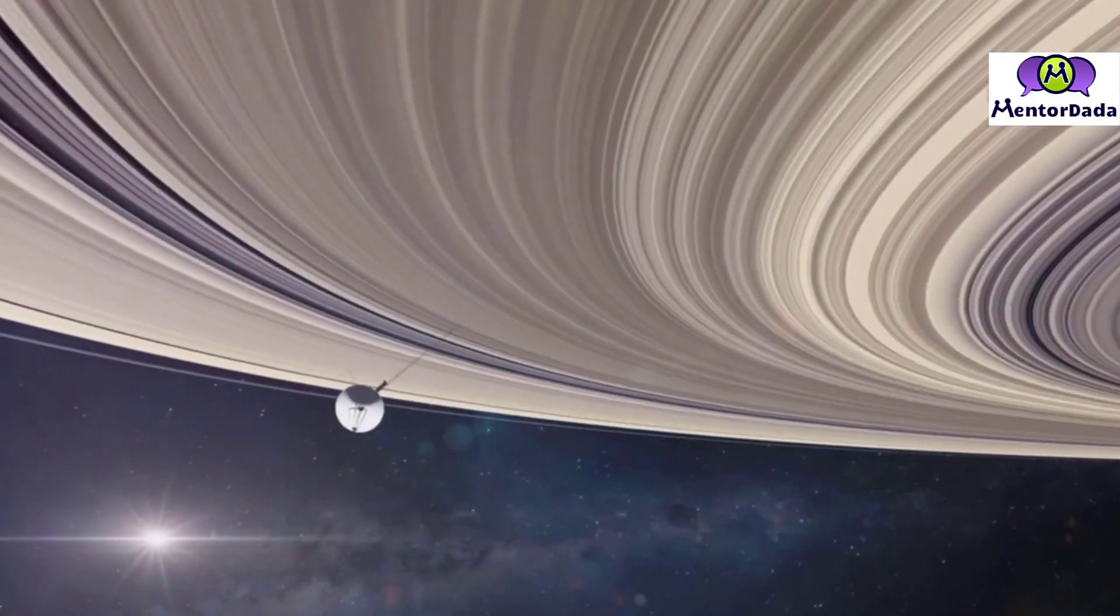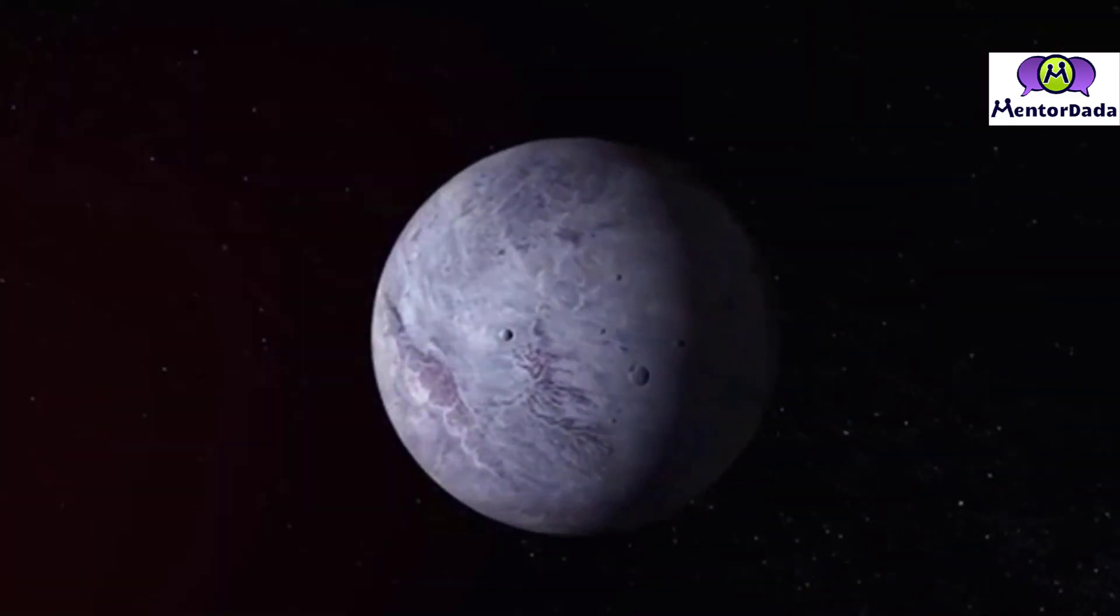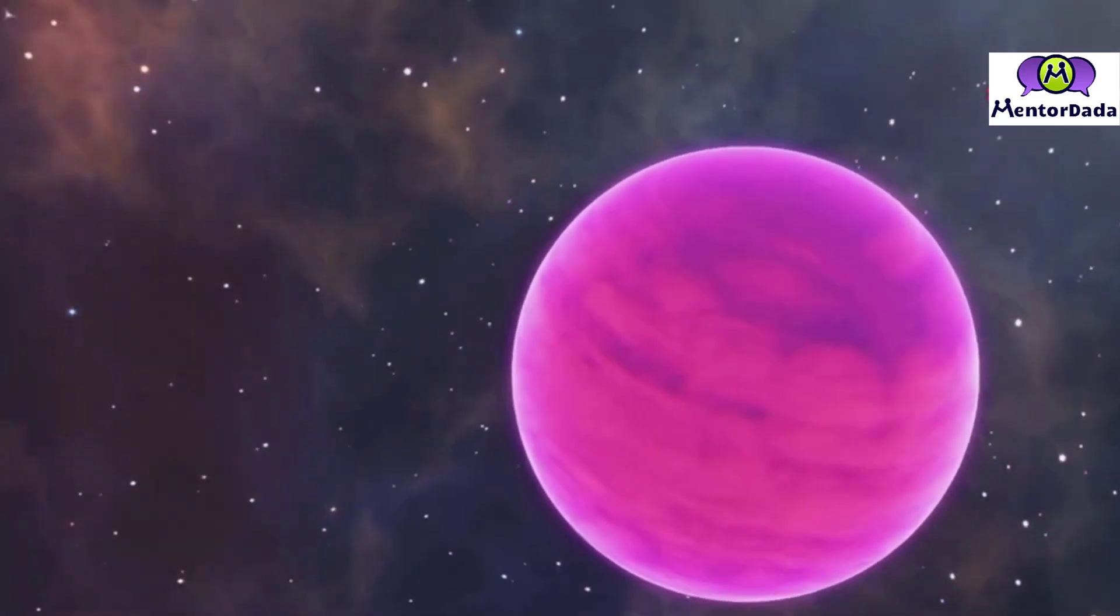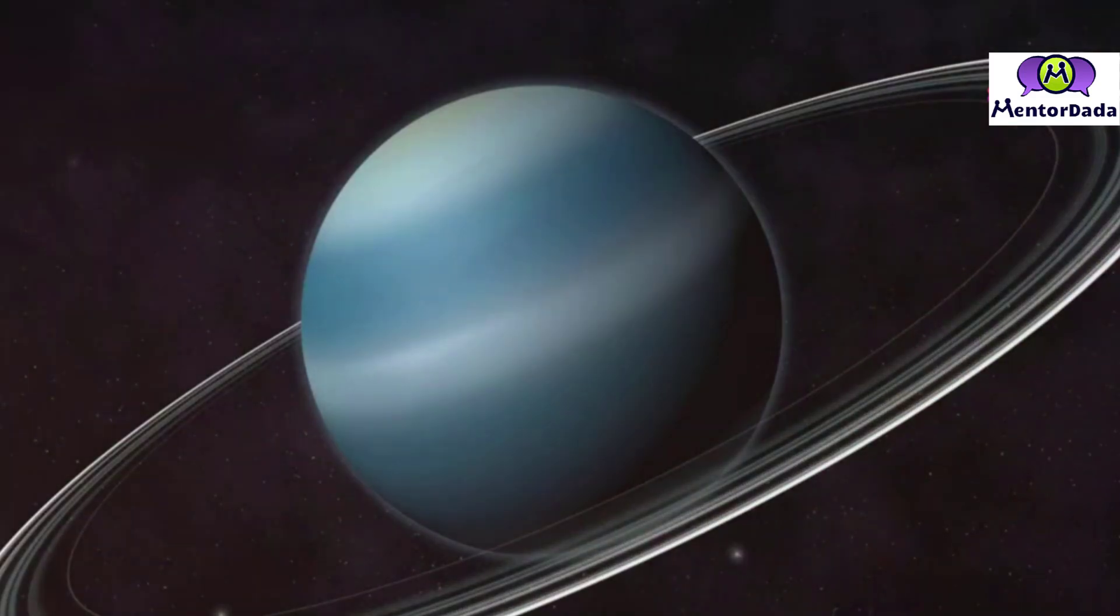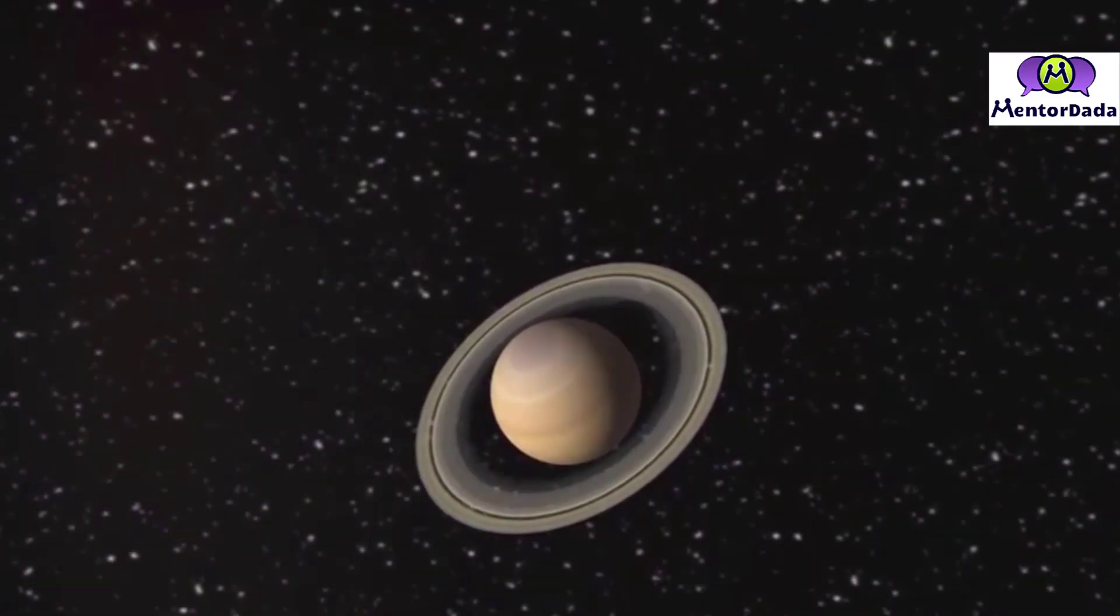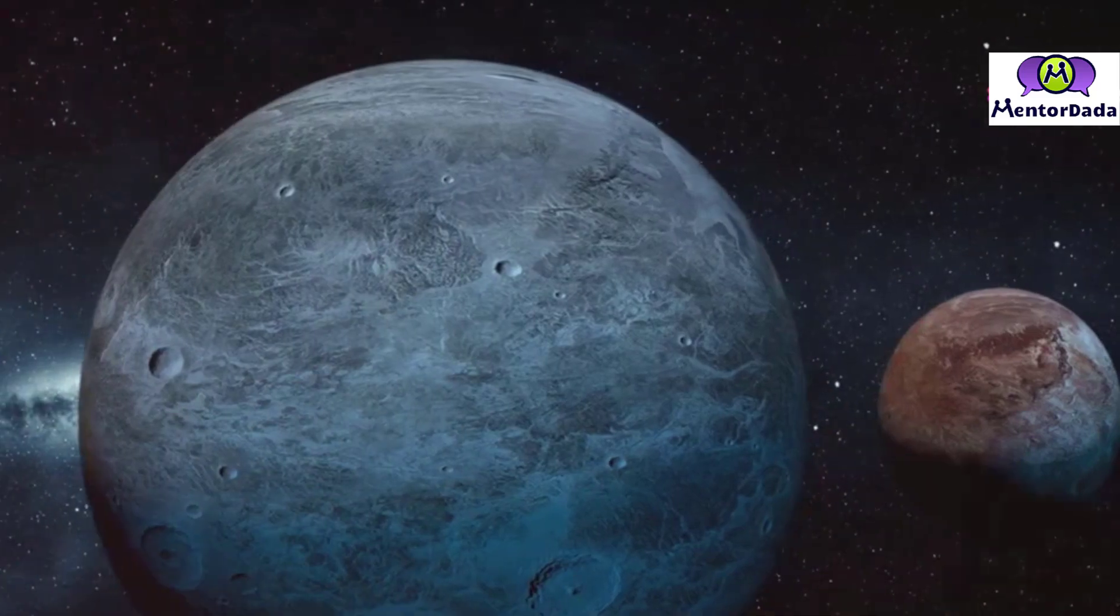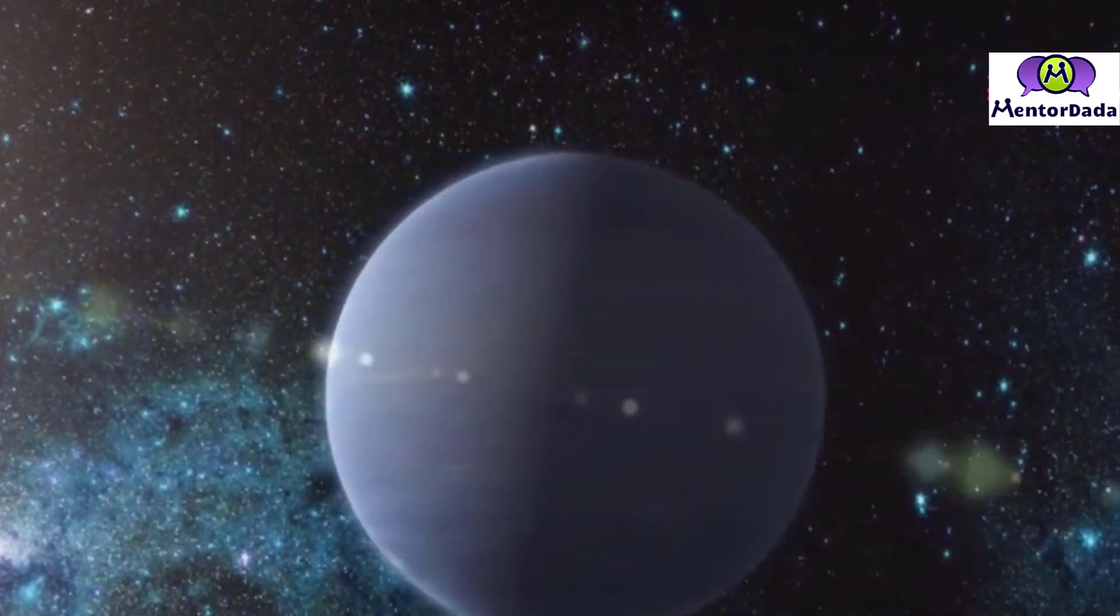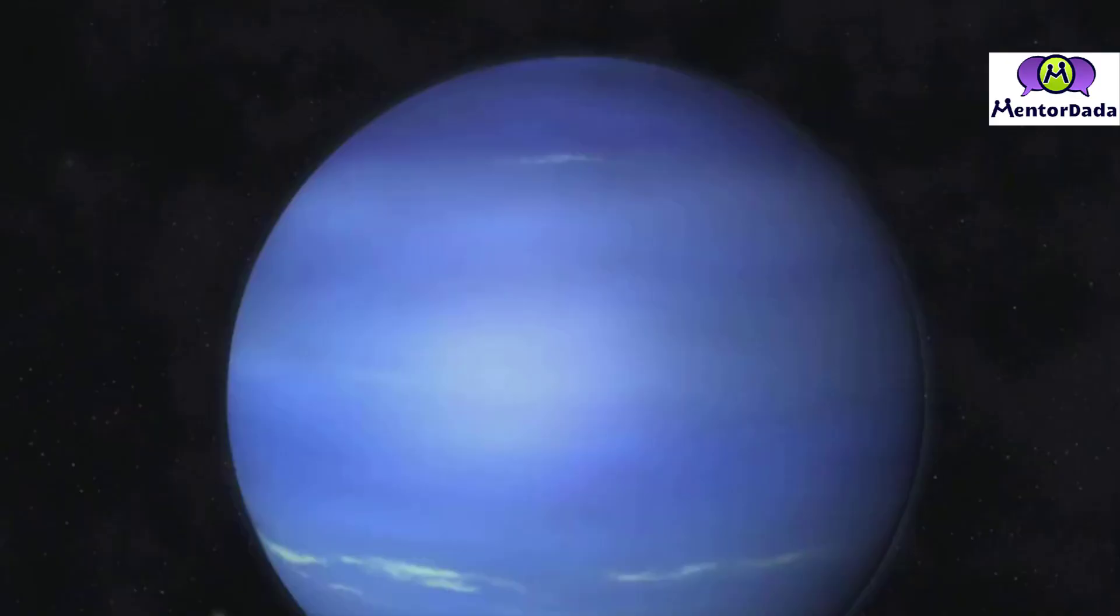Venturing farther out into the cold depths of our solar system, we encounter the ice giants Uranus and Neptune. Uranus, the tilted giant, is unique among the planets in our solar system with its axis of rotation almost lying on its side. While Uranus may appear as a faint blue-green dot even through telescopes, its unusual tilt and system of rings make it an intriguing target for observation. Neptune, the eighth and farthest planet from the sun, is a world of deep blue hues shrouded in a thick atmosphere of hydrogen, helium, and methane.